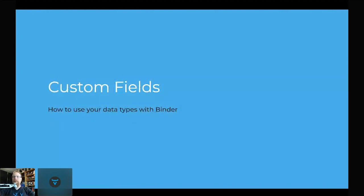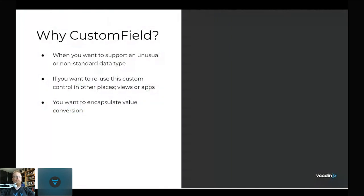So, custom fields. Let's start with how to use your data types with Binder. Vaadin has a lot of built-in fields — components that manipulate data — such as text fields, checkboxes, selects, and so on. But those operate only on specific data types: the text field operates on strings, the integer field works on integers. What if you actually want to modify your own data type? For that we have custom field.